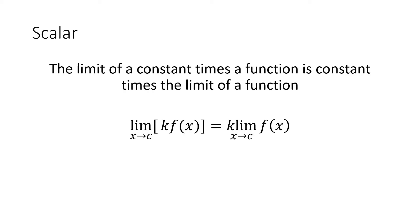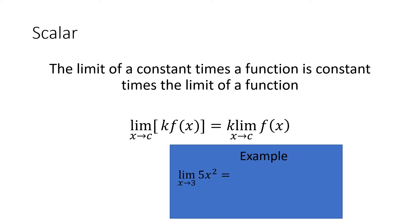The scalar property says that if f(x) is being multiplied by a scalar, we can factor out that scalar, find the limit, and then multiply by the scalar at the end. So the limit as x approaches 3 of 5x² — I can remove the 5 outside before the limit, find the limit simply of x², which would be 9, and then multiply that 9 times 5 to get 45.